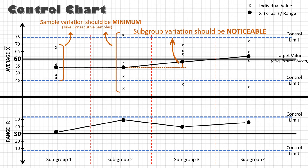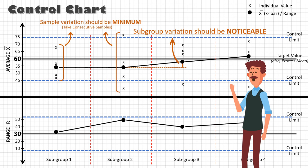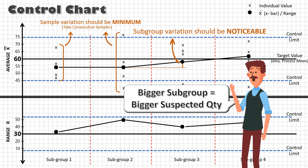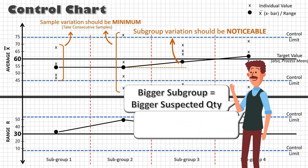So a sample size of five at every two hours is a generally accepted sampling plan for most of the processes.